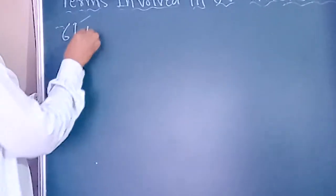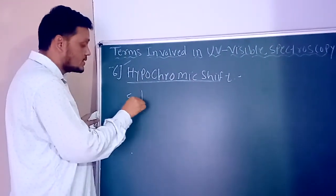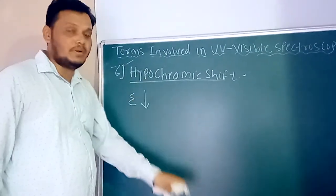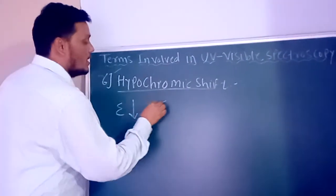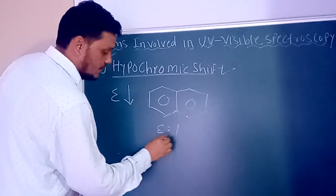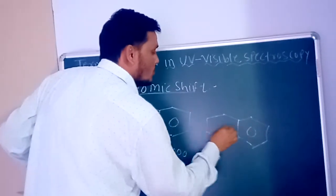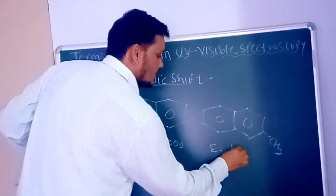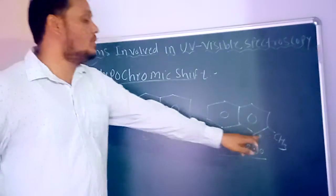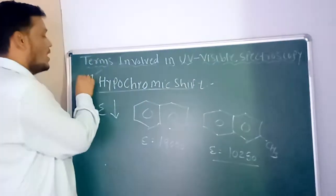The sixth term is hypochromic shift. When the absorption intensity (epsilon) of a compound is decreased, it is known as hypochromic shift. Example: naphthalene has an epsilon value of 19,000. For 2-methylnaphthalene, the epsilon value decreases to 10,250. This decrease occurs because when a group is introduced, the geometry changes, reducing the epsilon value. This is called hypochromic shift.